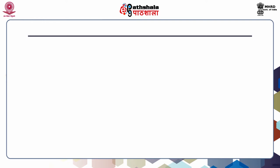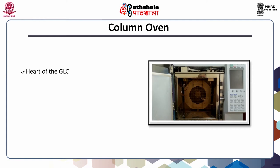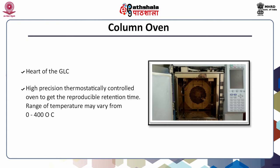Another very important component of GLC — sometimes called the heart of GLC — is the column oven. The efficiency of resolving the components in GLC analysis is temperature dependent. A high-precision thermostatically controlled oven is required for reproducible retention time and results. The temperature range is from 0 to 400 degree Celsius, maintaining a temperature from plus 10 ambient up to 400°C.